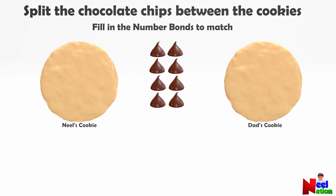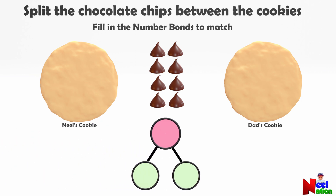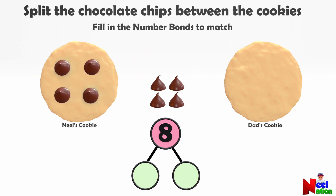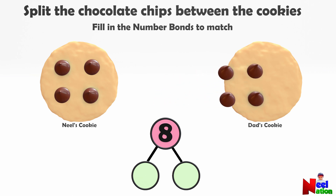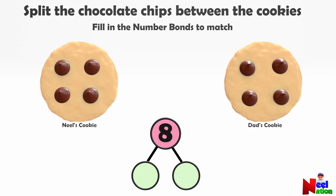Now let's play a fun cookie game! Here there are two cookies — one for Neil and one for Dad. There are some chocolate chips. Can you distribute the chocolate chips among the cookies and fill in the number bonds? How many chocolate chips are there? Eight — you are right! Neil says: I want four chocolate chips on my cookie and four on Dad's cookie. Let's fill in the number bonds. Here you decomposed number eight into four and four.